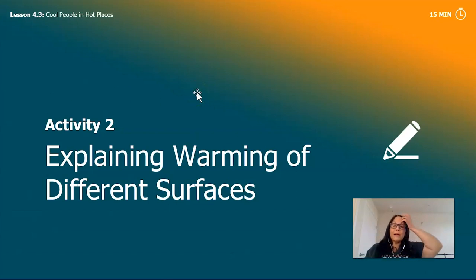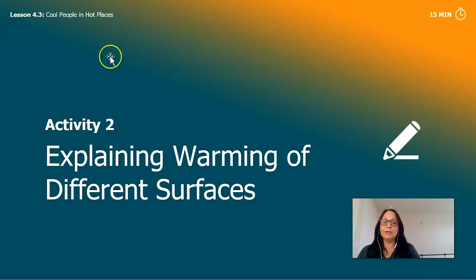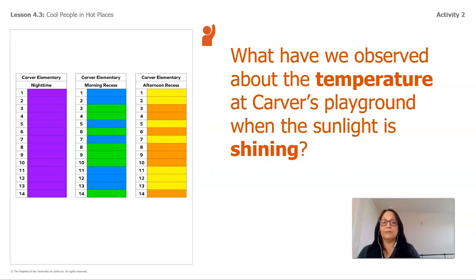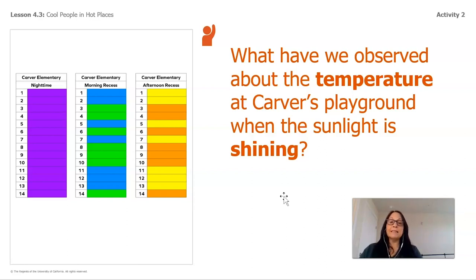We're going to continue with Activity 2: explaining the warming of different surfaces. The next slide says: what have we observed about the temperature at Carver's Playground when the sunlight is shining? The temperature is cold and cool during morning recess, and warm and hot at afternoon recess. That is the information we can see here.